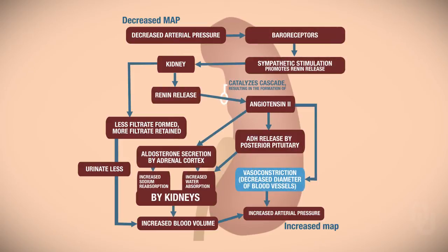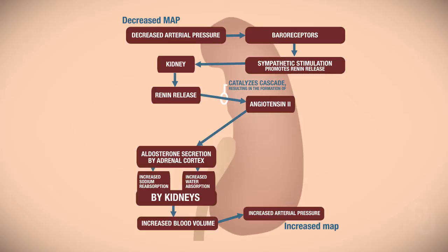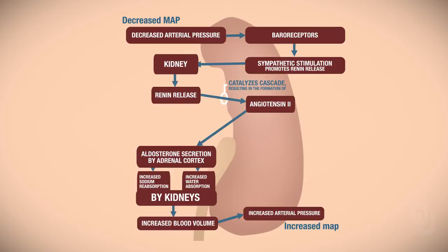While that is happening, you also have baroreceptors that are detecting the low MAP. When MAP is low, there would be little stretch detected by the baroreceptors compared to normal. Because there's less stretch detected, they're going to send a low frequency of action potentials, which is going to cause a sympathetic response. Once we have this sympathetic response, it will target the kidneys.